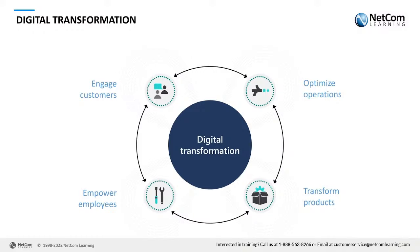Here we've got customer engagement information, operational information that keeps the business running, transformation products — anywhere from physical products to digital processes — and empowerment of employees. All of those things working together and interconnected allow business applications to be more robust, generate information so customers have an ideal experience, employees are empowered with accurate information, operations can be effective and efficient, and ultimately the best products and services are delivered so the customer is happy.